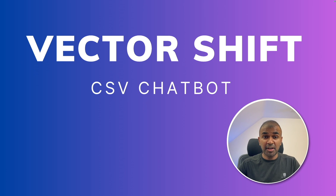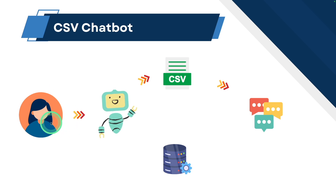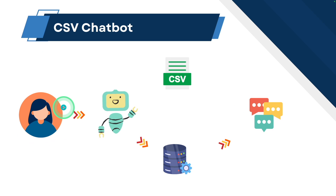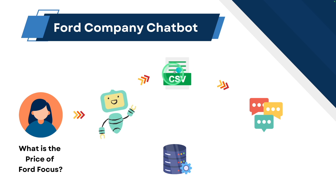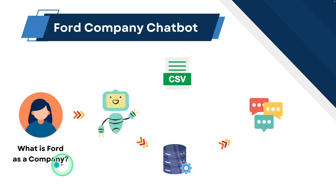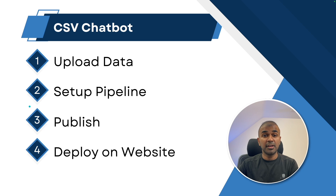I'm really excited to show you the VectorShift CSV chatbot. When the user asks a question to the chatbot, it is going to use the information from the CSV and then respond to the user accordingly. If the user asks any question other than the data available in the CSV, the chatbot will use a knowledge base to retrieve relevant information and answer the question. For example, a Ford company chatbot: if the user asks the price of Ford Focus, the chatbot reads from the CSV. If the user asks what Ford is as a company, the chatbot uses the knowledge base.